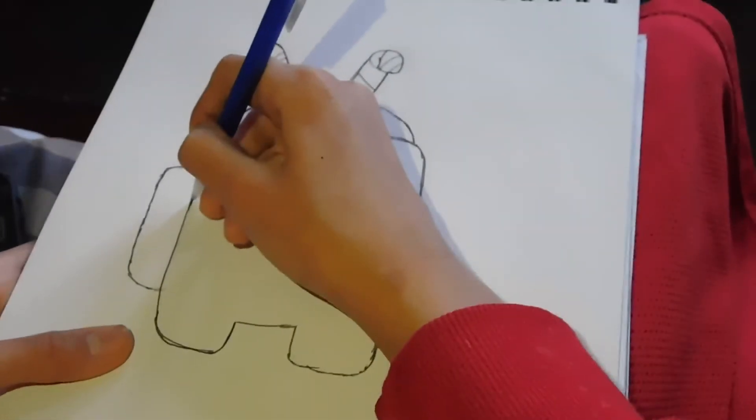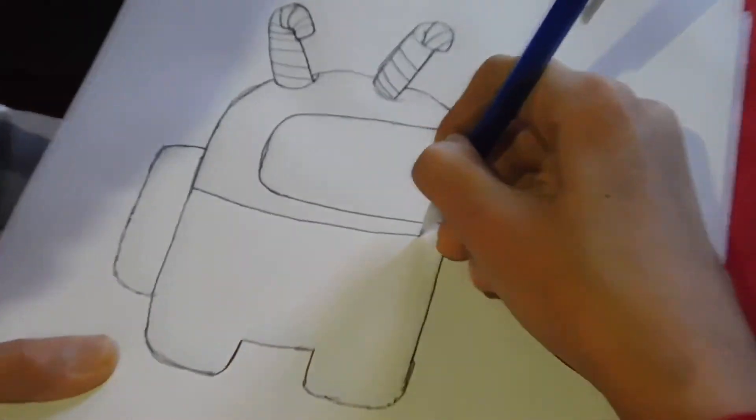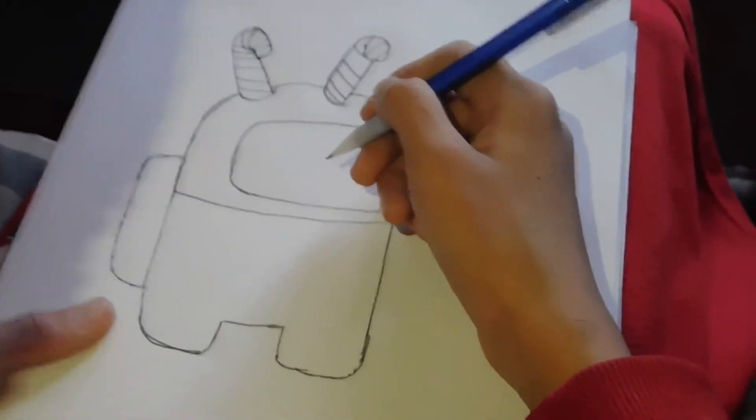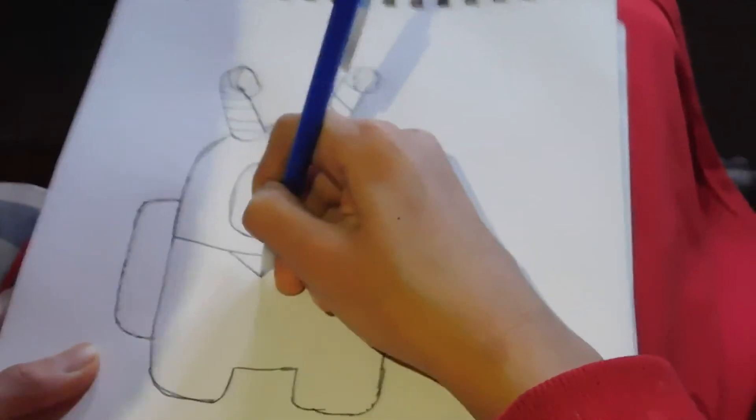And now we're going to draw the suit, because it's going to have a suit. The line didn't come out looking the best, but that doesn't matter. We're going to draw the tie. So it's going to look something like this.